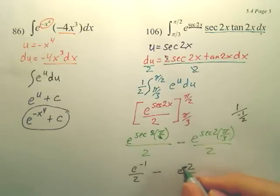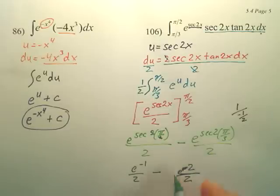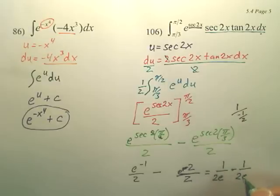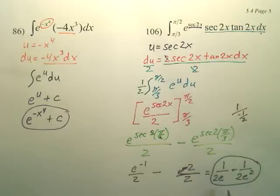So we have e to the negative 2 power over 2. Now what I would probably do here, just for simplification purposes, I would make this 1 over 2 e minus 1 over 2 e squared. Now you could also get e's on the bottom, you get a common denominator and everything, but that's probably good enough. That would be your answer, which you could put into calculus.